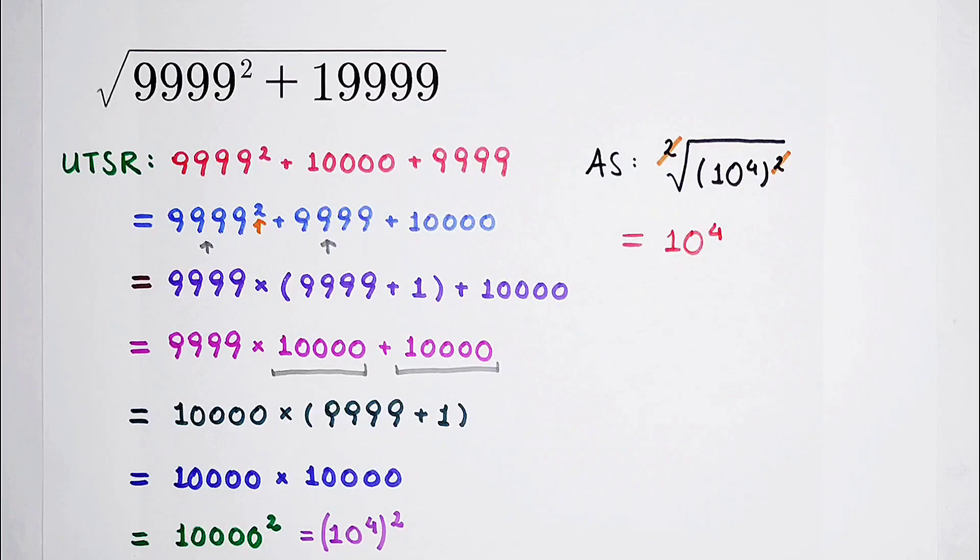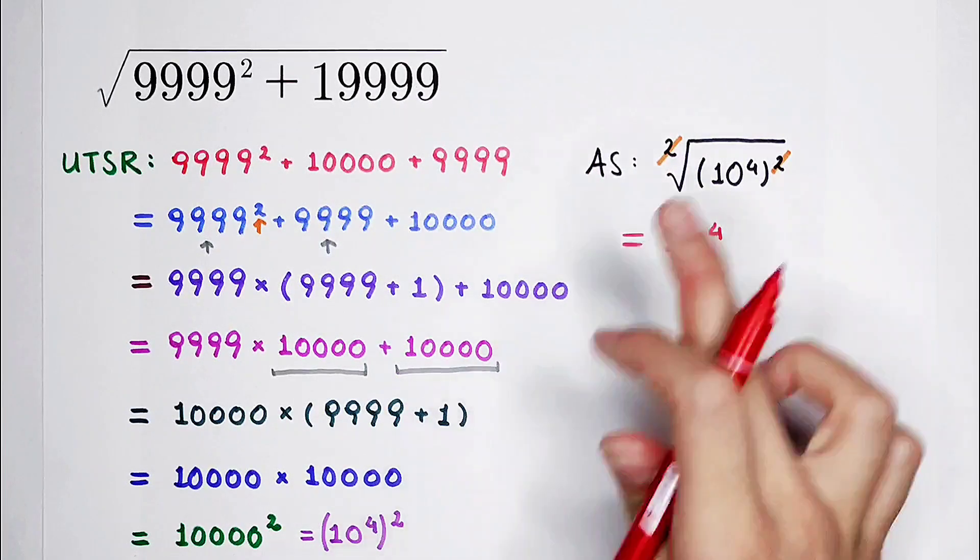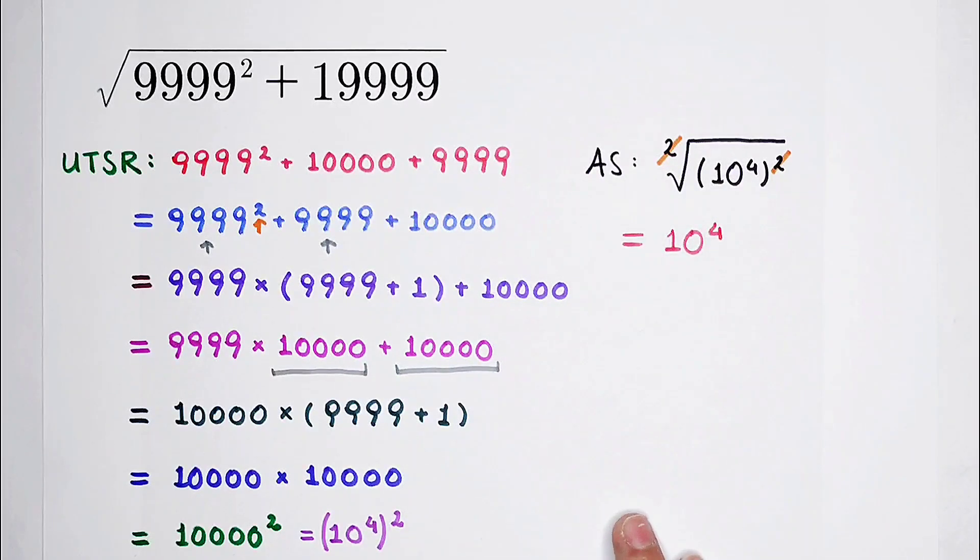10 to the power of 4. Now, stop, stop, stop, stop, stop. 1, 2, 3, 4, 5, 6, 7, 8, 9, 10. 10 steps. Are you lazy? If not, then use this method.